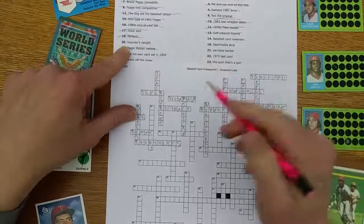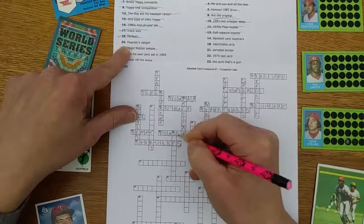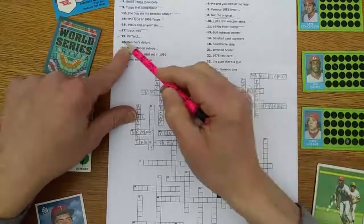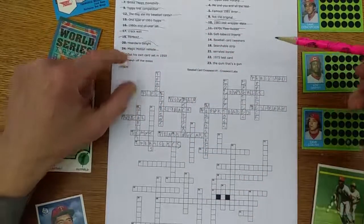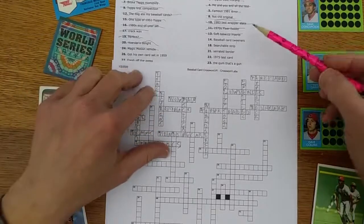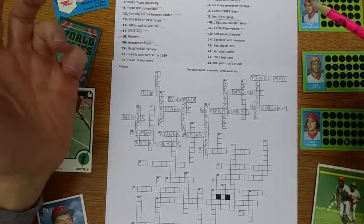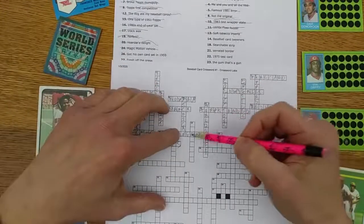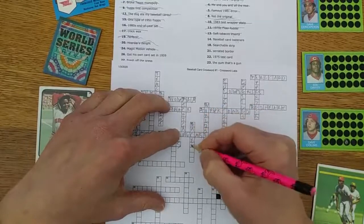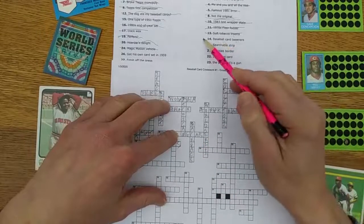Hoarder's delight: I'm pretty sure I know what that is. For me, I always kind of lusted after vending cases every spring because you could get 12,000 brand new cards all at once. You got 24 500-count vending boxes in the case. A searchable strip - that's going to be a rack pack, I think. Yeah, because you can see the players front and back. It's a strip of cards and you can search through them until you find somebody showing that you like.